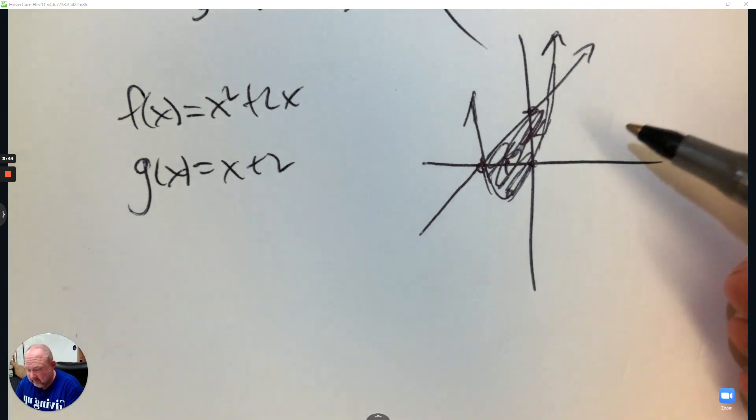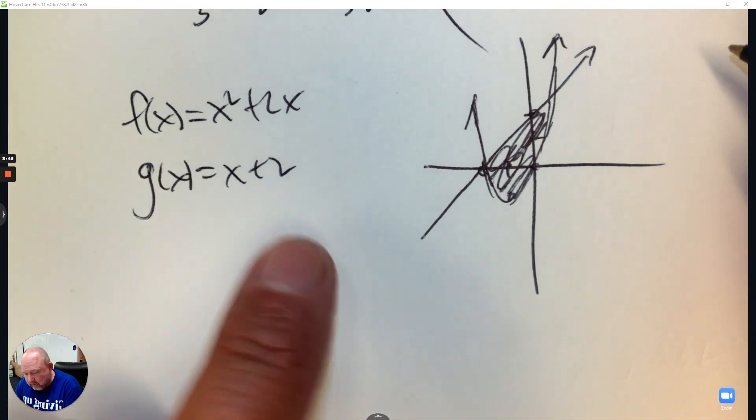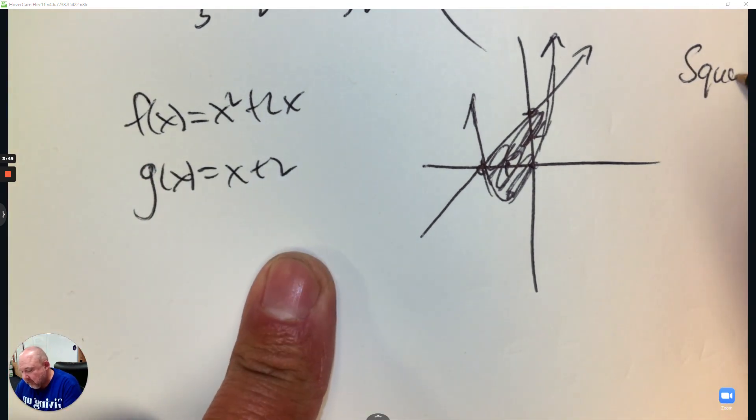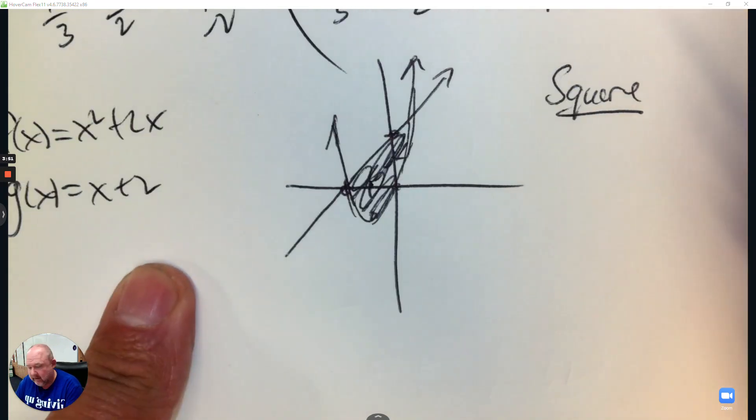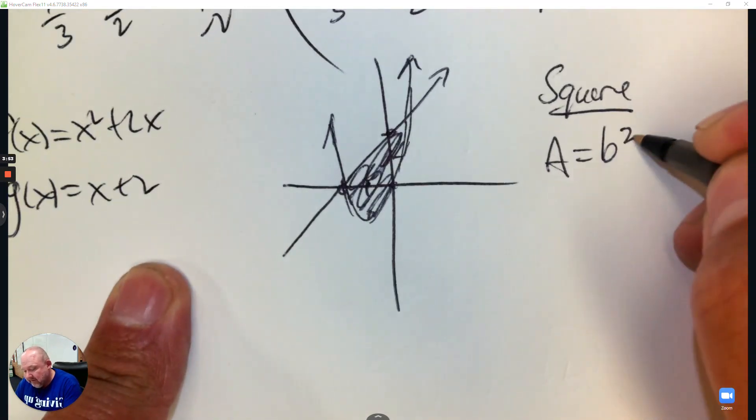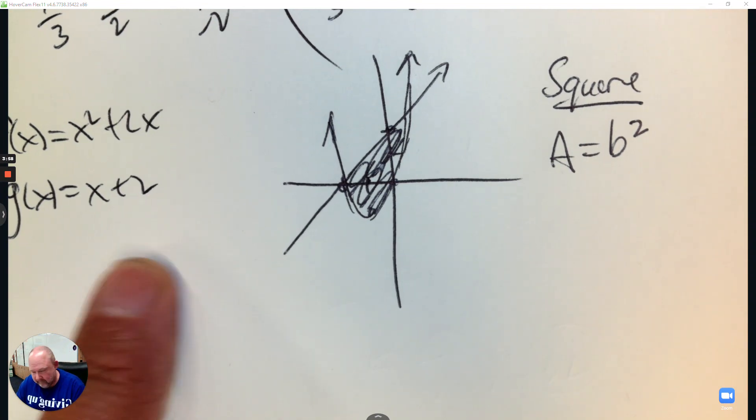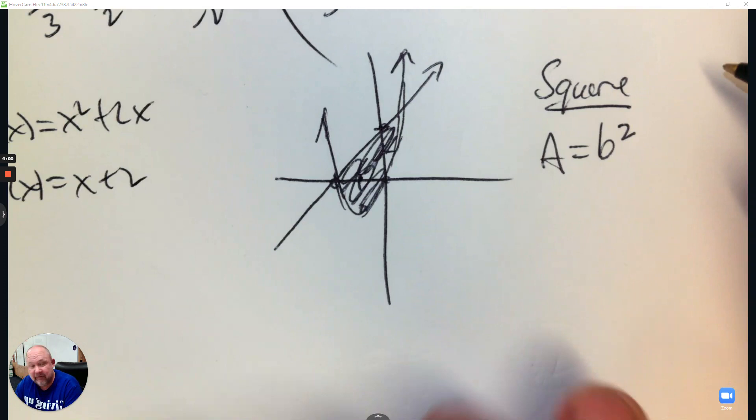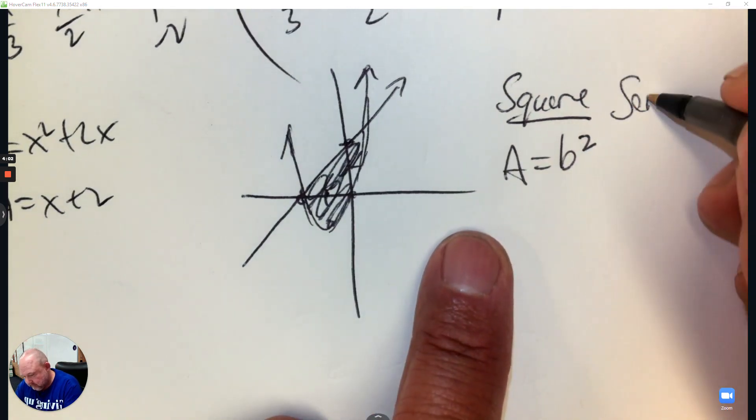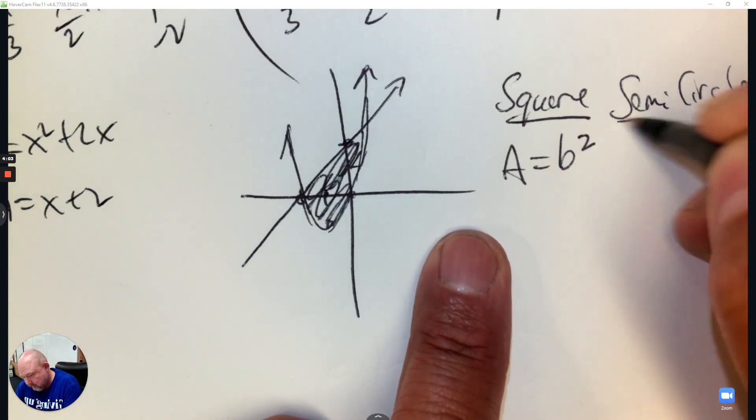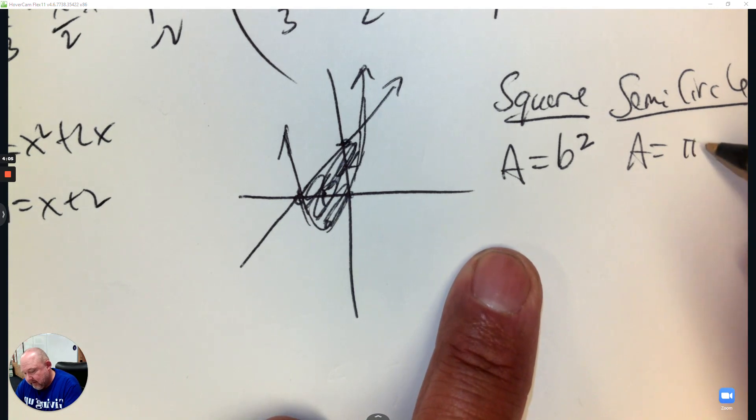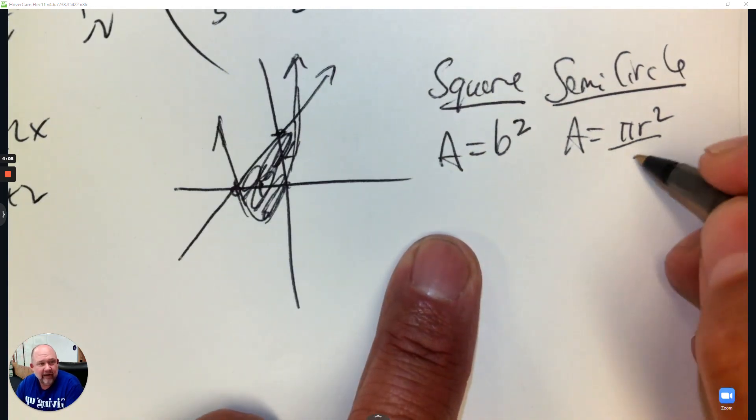So with known cross sections. So let's say the known cross section is a square. I need to know the formula. You take one base and you square it. For if it's a semicircle, then it's pi r squared divided by 2.